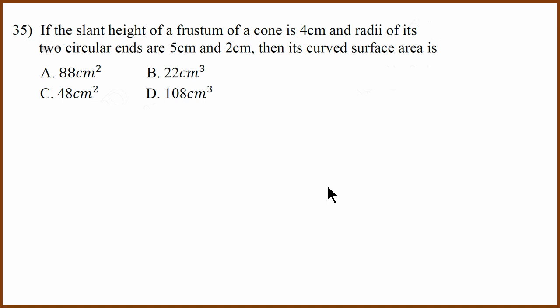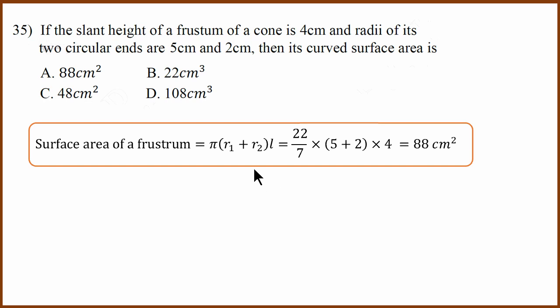Thirty-fifth question: slant height of a frustum of a cone. The curved surface area formula is pi times (R1 plus R2) multiplied by L. Using pi as 22 by 7, R1 plus R2 equals 5 plus 2 equals 7. So 7 divided by 7 is 1, and 22 multiplied by 4 gives 88 square centimeters.